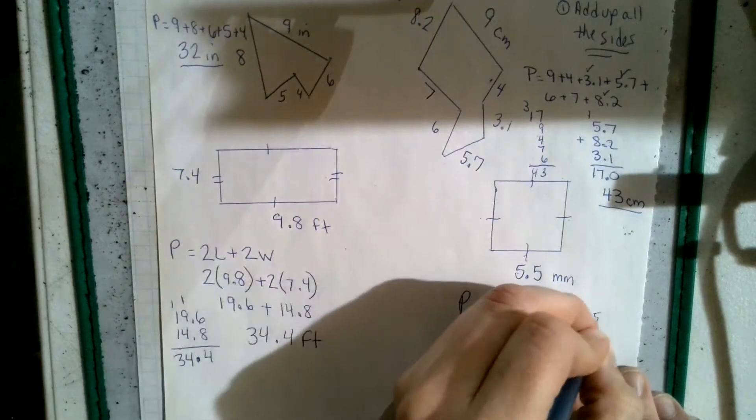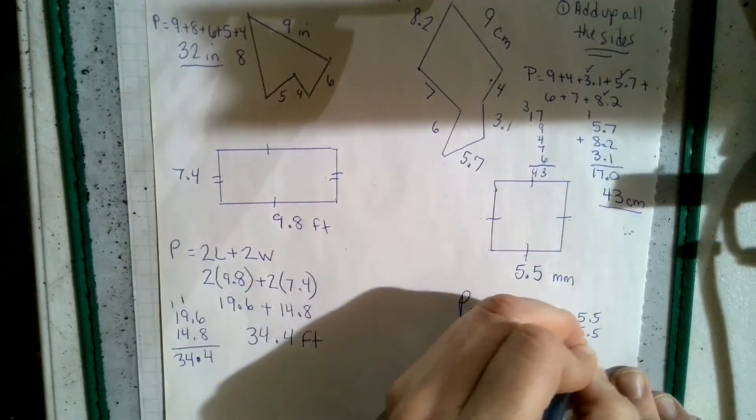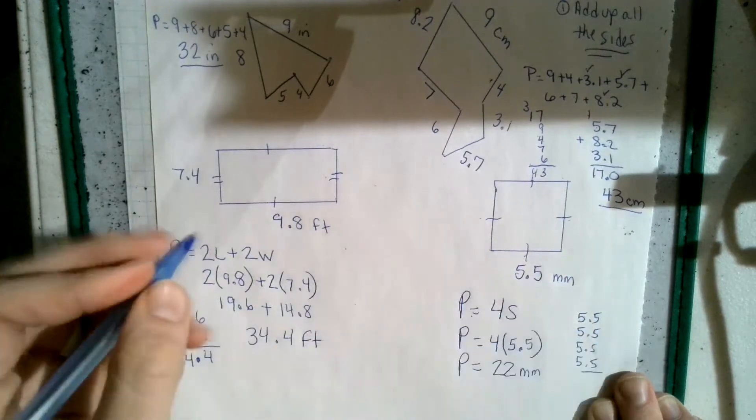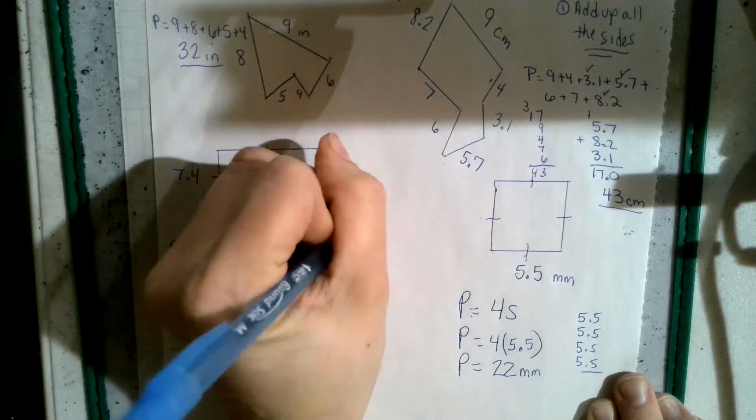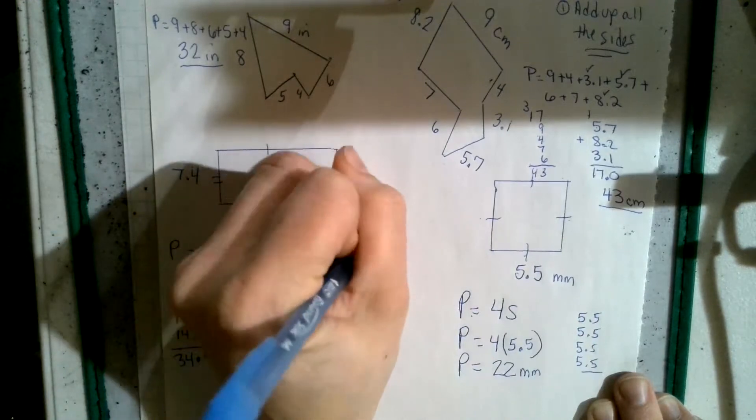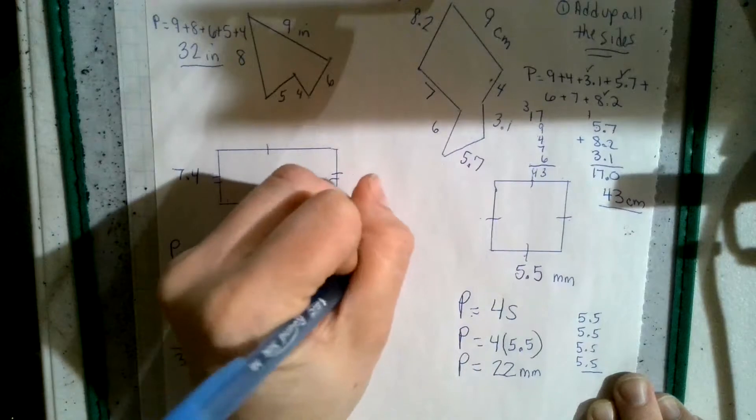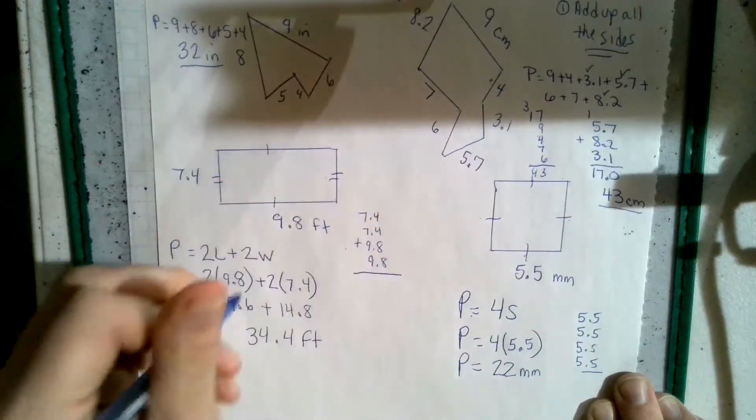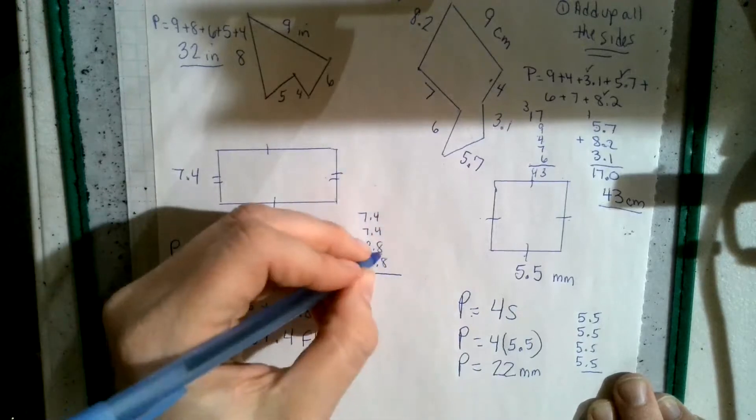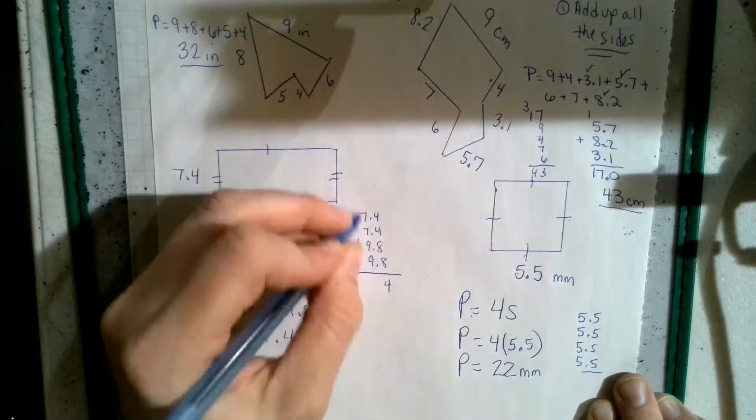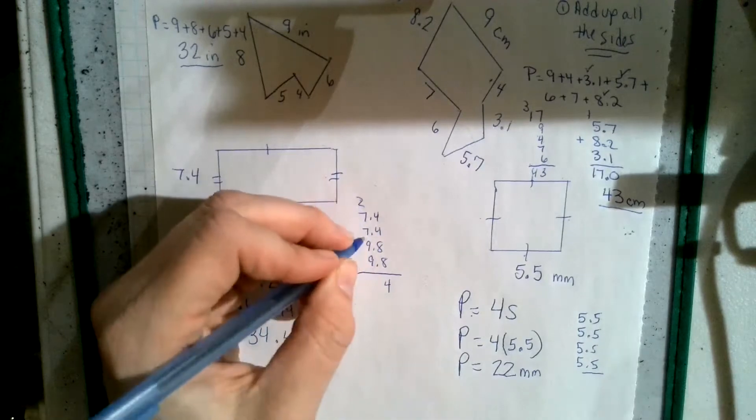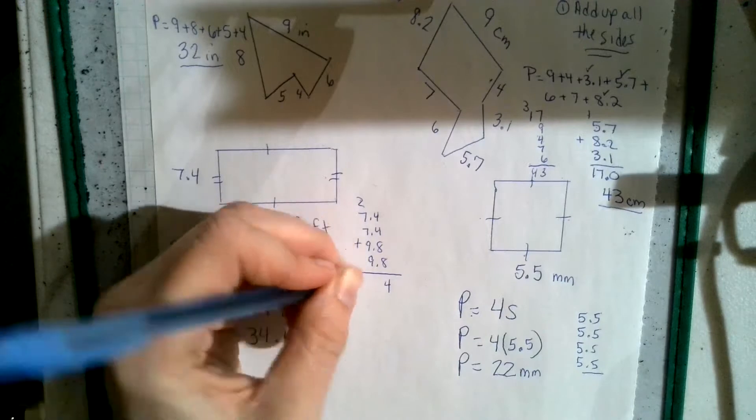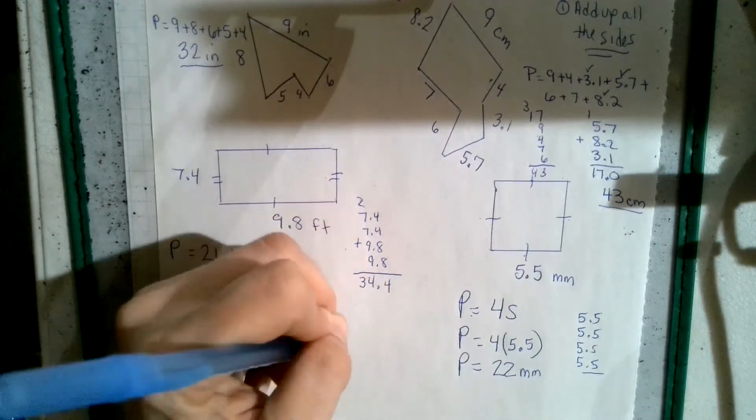Now you could always just repeat add if you want to. You can do the same thing over here, you could go 7.4, 7.4, 9.8, 9.8, and just add them instead of doing the formula. You'd still get the same answer. 16, 24, 14, 15, 16, 17, 18, 19, 20, 21, 22, 23, 24, 30, 34. Bring down. Same answer.